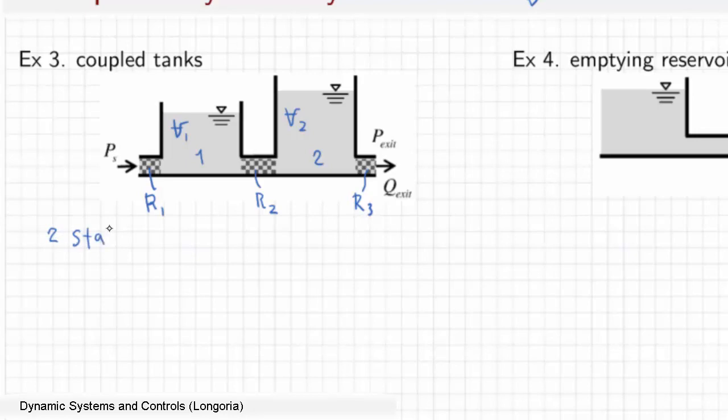And I'm going to write just the continuity equation for each one of those. V dot 1 is going to be the flow coming in through here. There's no flow coming in indicated up here, but then there's the flow going out.